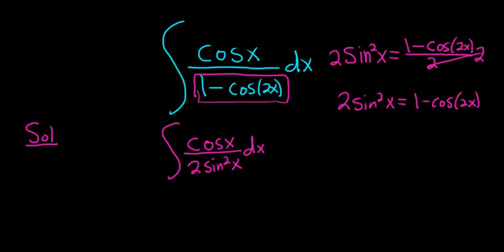And this appears to be something familiar. Let's see if we can rewrite this. We can pull out the 2, and that will become a 1 half. And let's try to think of it as cosine x over sine x times 1 over sine x, right? Because sine times sine is sine squared.